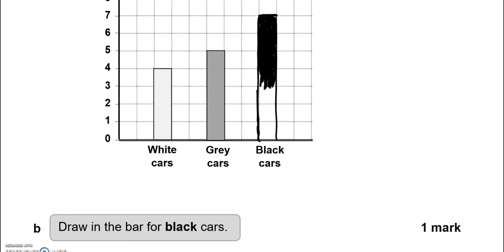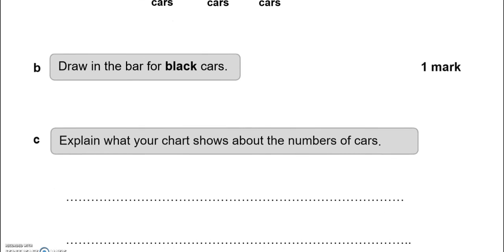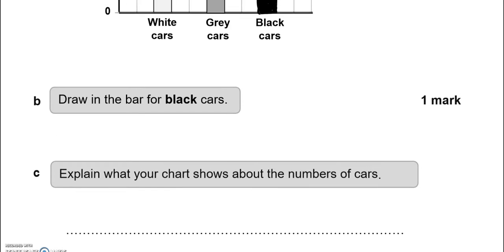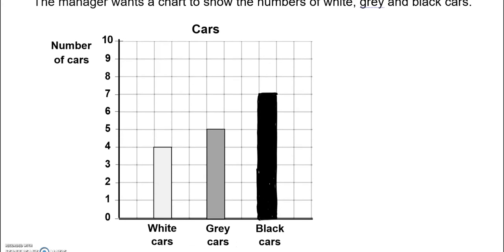Because the bar for the white cars is in white, the bar for the grey cars is in grey, and now this is for black cars, so I'm going to colour it in black. You don't need to worry about that though. Explain what your chart shows about the numbers of cars. There are more black cars than there are white or grey cars.